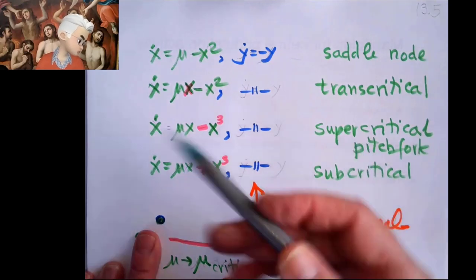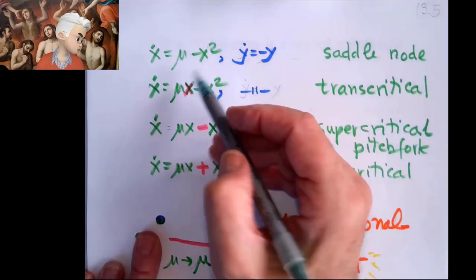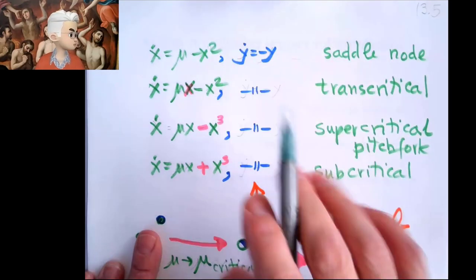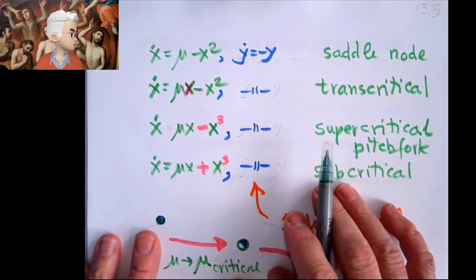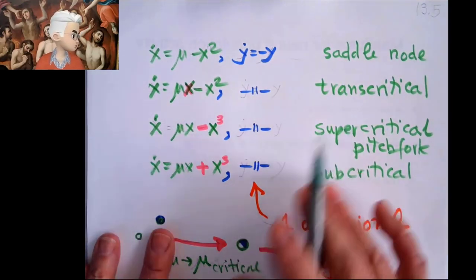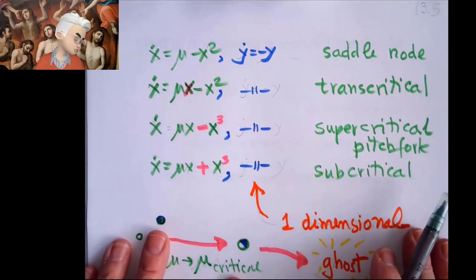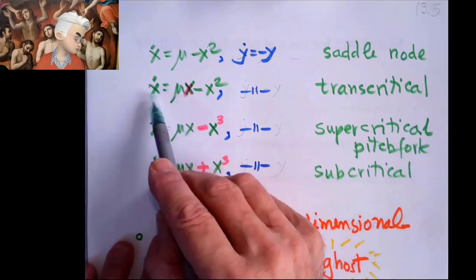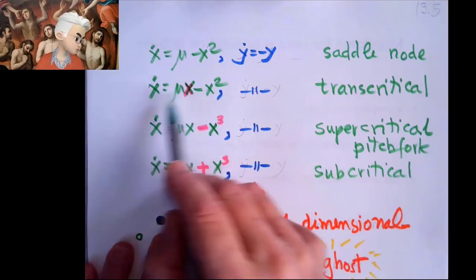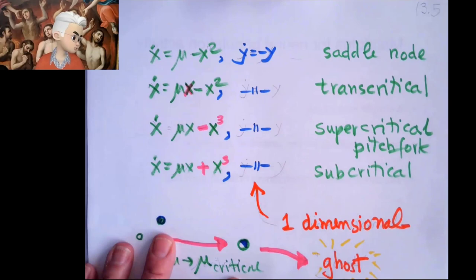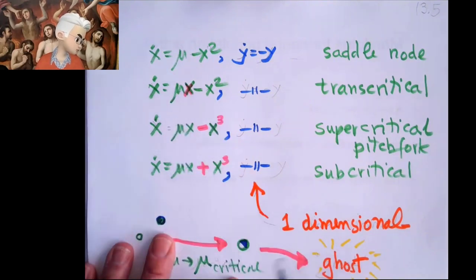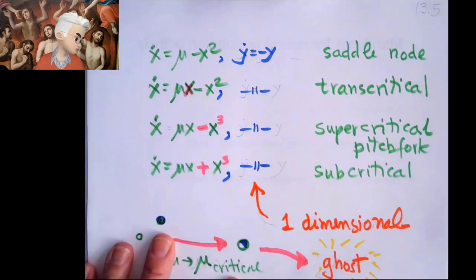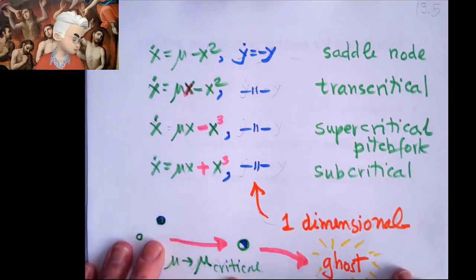So then the list is most generic thing is saddle node. Either nothing happens or a stable, unstable fixed point is there and they have that typical flow just run through it. Or I have a symmetry which forces everybody here in proportional to the x. That's transcritical or pitchfork. That would be a situation where either I have only one fixed point or I have three.